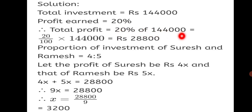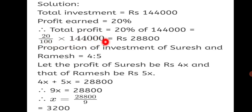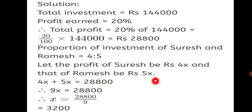20% of investment means 20/100 multiplied by 1,44,000. So total profit is 20% of 1,44,000 which equals 20/100 × 1,44,000. The zeros get reduced: 20 × 1,440 gives us Rs. 28,800. The proportion of investment of Suresh and Ramesh is given as 4:5. Let the profit of Suresh be Rs. 4x and that of Ramesh be Rs. 5x.